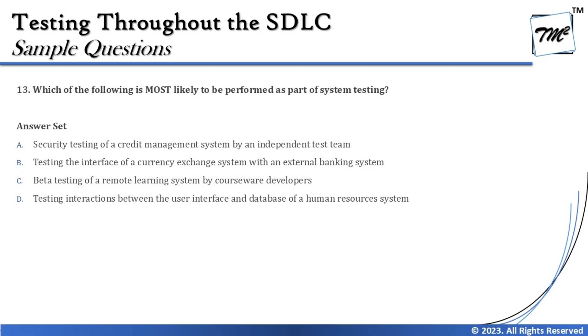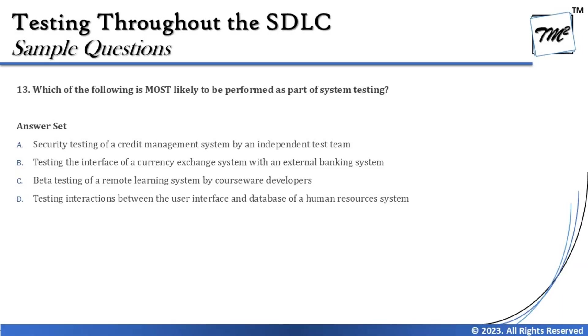Option A says: security testing of a credit management system by an independent testing team. Non-functional testing can kick off from system testing. Remember the key point from the syllabus: all four types of testing — white box, black box, functional, and non-functional — can be conducted at any level, from component through system, integration, and acceptance testing.